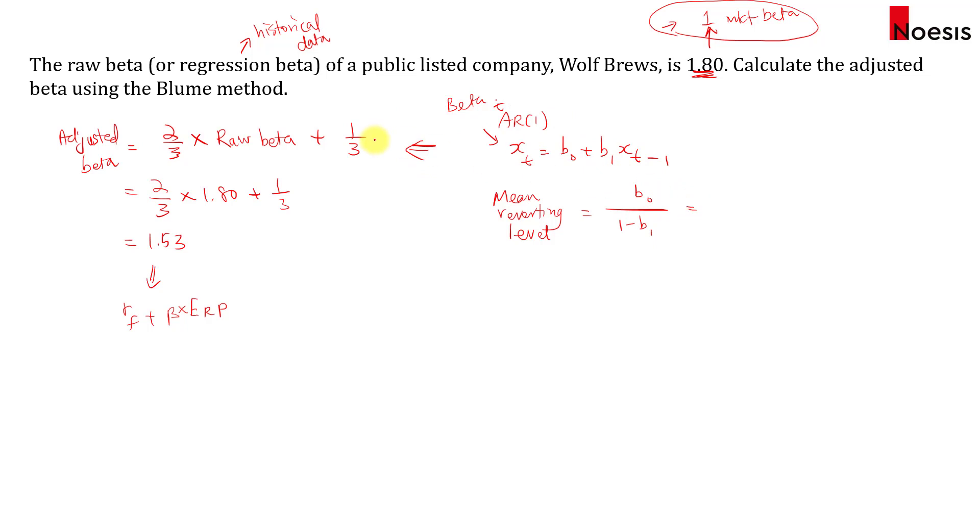b0 is actually equals to the constant, which is one third, and b1 is the coefficient of the slope, that is two thirds. So that will be one third over one third. So that will be equals to one. So it tells us that for this model, the mean reverting level is one, which is the market beta.